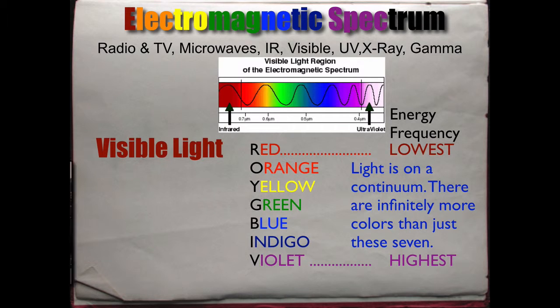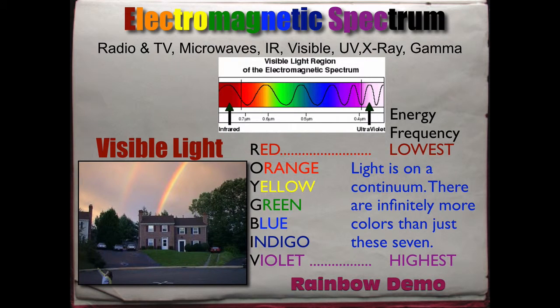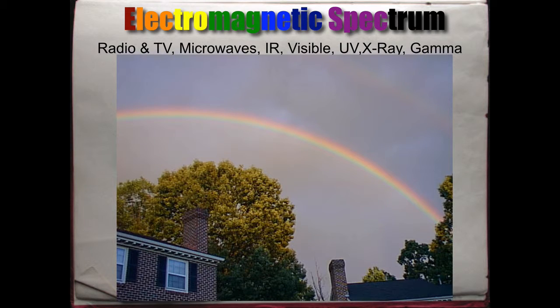And of course, what you're probably familiar with the most is, oh my god, a double rainbow. A full-on double rainbow. That's what you're probably used to. Well, that's just all part of Roy G. Biv. But there's our rainbow right there, part of our visible light spectrum.